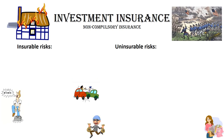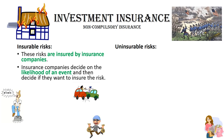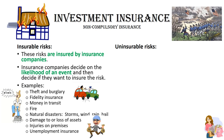A quick comparison of insurable and uninsurable risks: insurable risks are those that insurance companies are willing to insure against. The insurance company will assess the likelihood of an event actually happening and decide whether they are willing to insure you against that risk. The more likely it is, the higher the premium will be. Examples of insurable risks include theft and burglary, fidelity insurance, money in transit, fire, natural disasters, damage or loss of assets, injuries on your premises, and unemployment insurance.